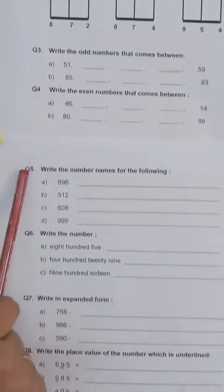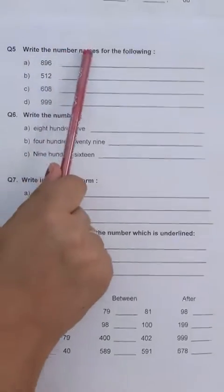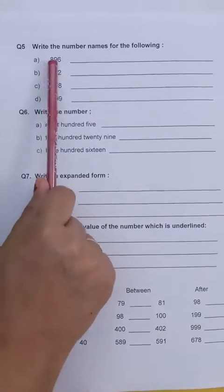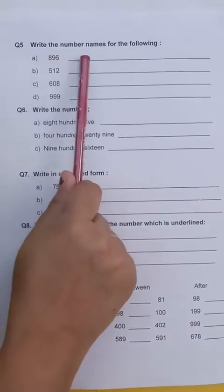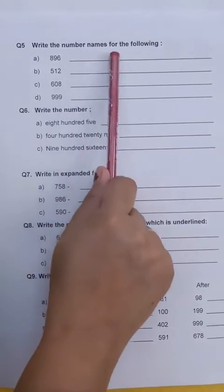Then coming to question number 5. You will write the number names. Example 1, 896. Here you will write 896.